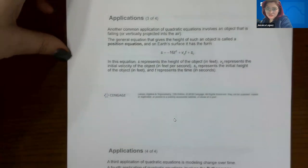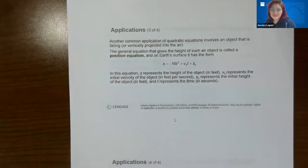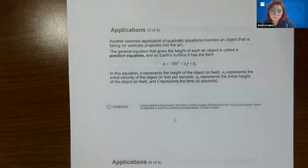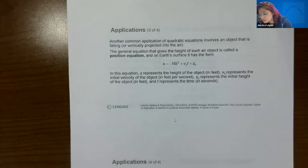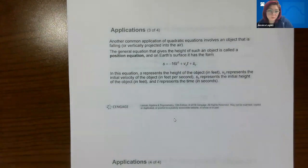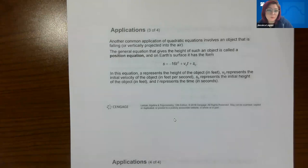Another kind of application involves objects that are falling or being projected into the air. They have a general position equation that tells you where the object is as it's falling or projected and then falling. On Earth's surface, the formula uses −16 because of gravity — you'll learn much more about where that −16 comes from when you get to calculus. For now, just take for granted that it's −16 and it has to do with gravity.